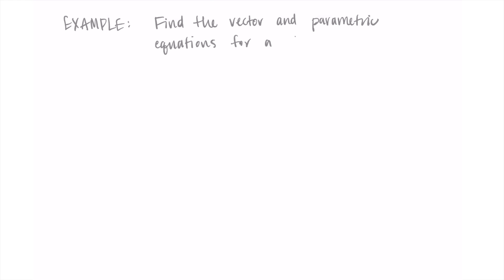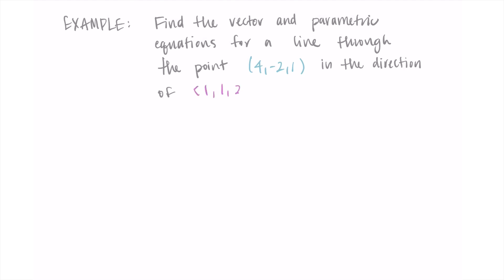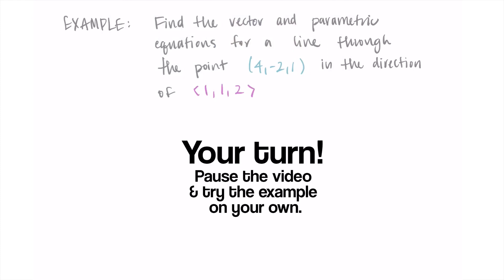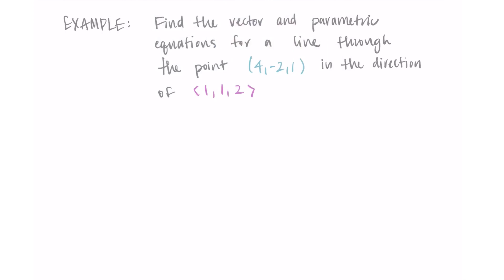For our first example, we're going to find the vector and parametric equations for a line that goes through the point (4, -2, 1) in the direction of the vector (1, 1, 2). You can pause right now if you'd like and try this on your own, then come back when you're ready.